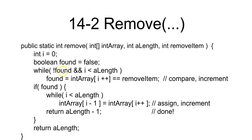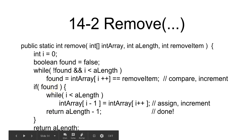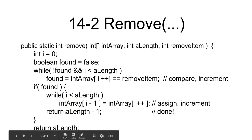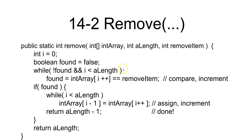While we haven't found the element and we're not at the end of the array, keep incrementing i while comparing it to the remove item. If found, set the boolean 'found' to true and exit the loop. Then we need an if-statement because we don't know if we hit the end or found it. If found, shift over all elements - put what's at position i into position i-1 then increment i. Once done, return length minus one.